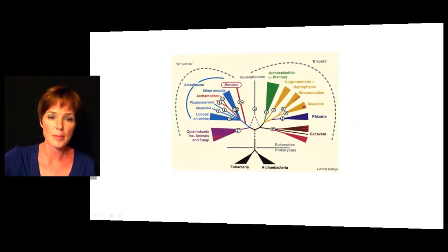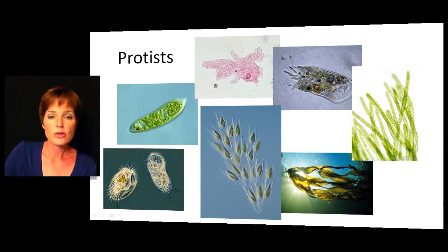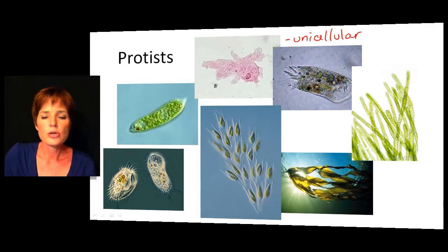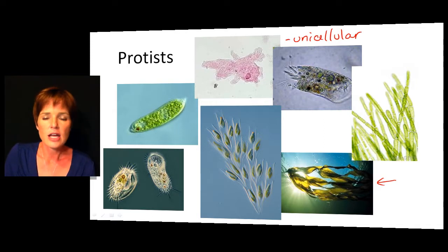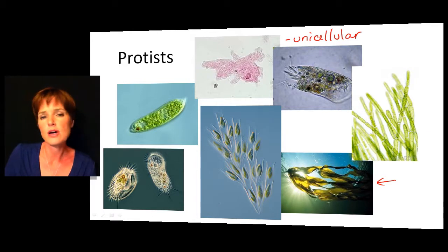Protists are very diverse, but one thing you'll notice about the majority of them is that they are unicellular. However, there are certainly some protists that are multicellular and quite large. At the bottom of this slide we can see a brown algae, which is an extremely large seaweed found in the ocean. So we'll have mostly unicellular protists, some that live as colonies, and also some multicellular ones.